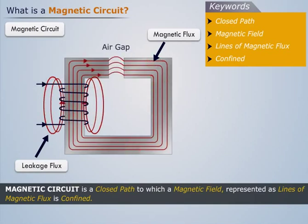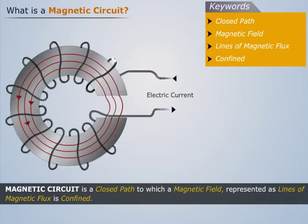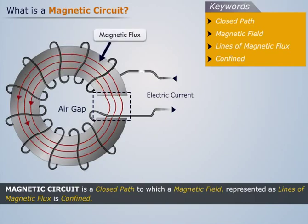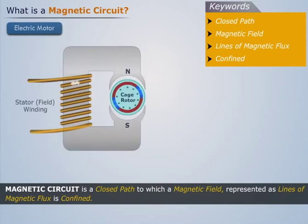For example, in a ring-shaped electromagnet with a small air gap, we see that the magnetic field or flux is almost entirely confined to the metal core and the air gap which together form the magnetic circuit.